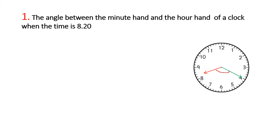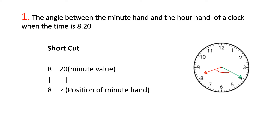Now, let's look at the angle at 8:20. First, we look at the 20 minutes. We write the 20 minutes. What is the minute value? If you pick up the minute, it is 4. The difference is 8 minus 4, which equals 4.